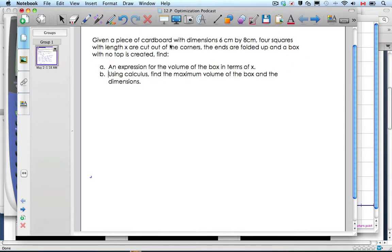With this problem we're given a piece of cardboard with dimensions 6 by 8 centimeters and four squares are cut out. We're going to find the corners are folded up and a box on the top is created, so to get the sense what it looks like.